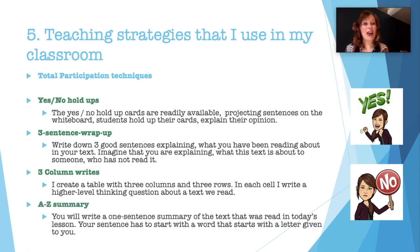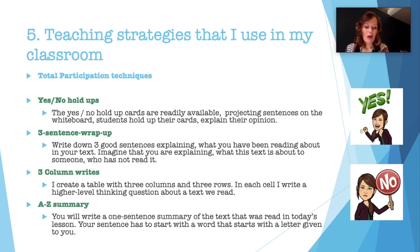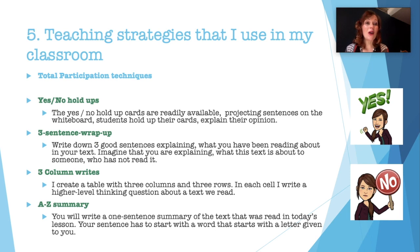A-through-Z Summary: probably the most fun activity. Students read a text with me, then each receives a paper with a letter on it. They have to write about what they learned from the text, but their sentence must start with the letter given to them — a one-sentence summary starting with a word beginning with their assigned letter. Once everyone has written their summary, we put all sentences on the whiteboard. This is a very fun exercise for both me and the students, since we all get to see what everyone came up with.